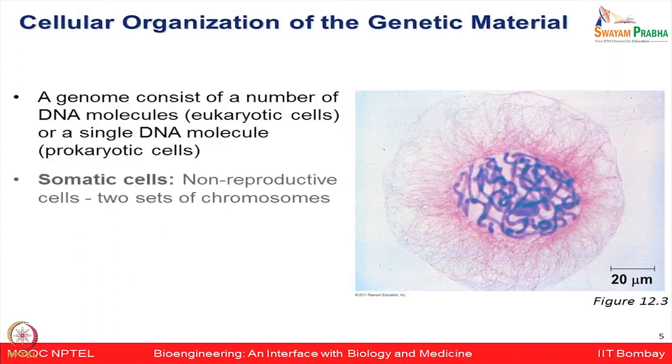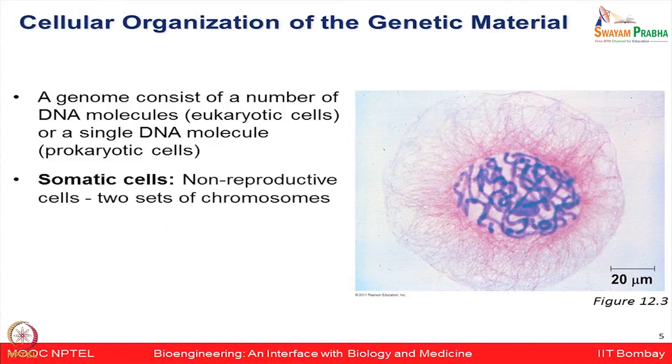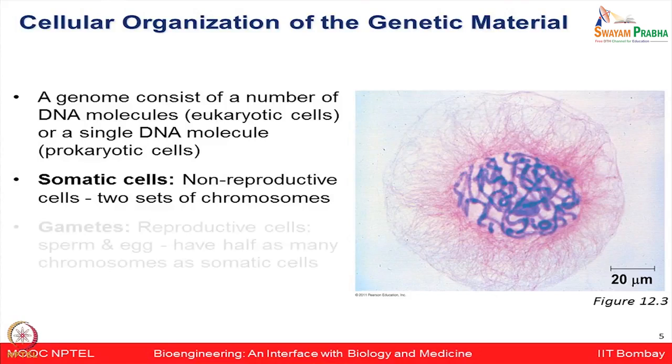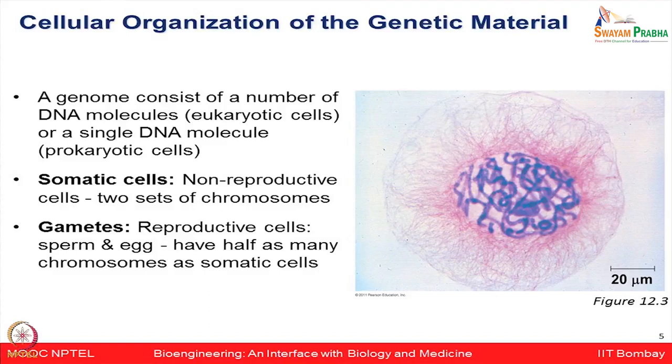What is the cellular organization of the genetic material? Broadly, a genome consists of the entire DNA molecules — in the case of eukaryotic cells — and in the prokaryotic cell context it is a single DNA molecule. Somatic cells are the normal body cells, non-reproductive cells which contain two sets of chromosomes, whereas gametes are the reproductive cells — especially sperms and eggs — and they contain half as many chromosomes as somatic cells.